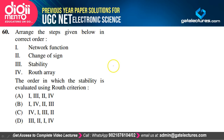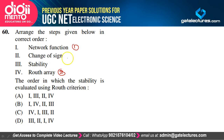Correct order to evaluate stability using Routh-Hurwitz criterion: first, network function; second, form the Routh array; third, change of sign; fourth, stability decision. Option B is correct.